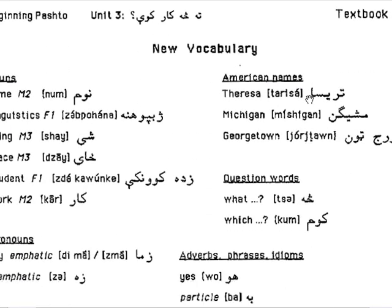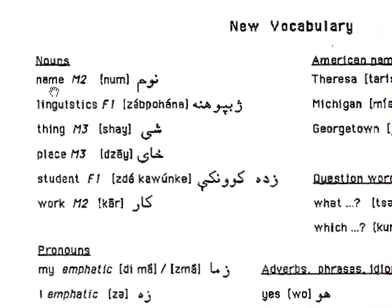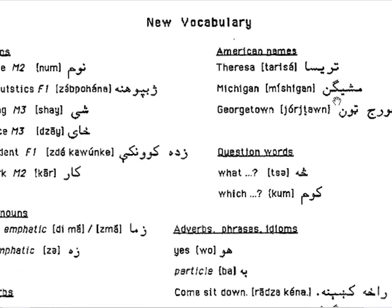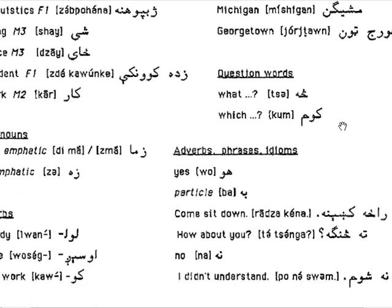New vocabulary encountered: 'num' — similar to the English 'name,' again an Indo-European rootstock word. 'Je pohana' means 'linguistics' or 'knowledgeable of languages.' 'Shay' means 'thing,' 'zai' means 'place,' 'zdakawun ke' means 'student,' 'kar' means 'work.' American names used: Teresa, Michigan, Georgetown in DC.